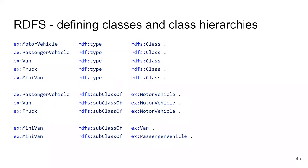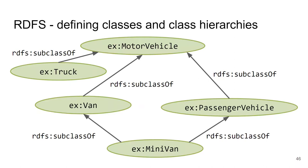RDFS allows creating a subclass hierarchy using rdfs:subClassOf. For example: PassengerVehicle is a subclass of MotorVehicle — meaning every instance of PassengerVehicle is also an instance of MotorVehicle. Viewed as sets, passenger vehicles are a subset of motor vehicles. We can say Van and Truck are subclasses of MotorVehicle, and Minivan is a subclass of both Van and PassengerVehicle. Therefore every minivan is also a van, a passenger vehicle, and a motor vehicle.